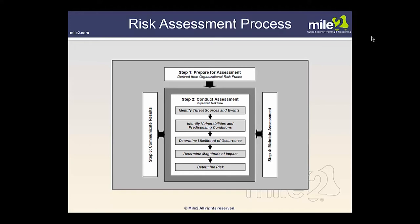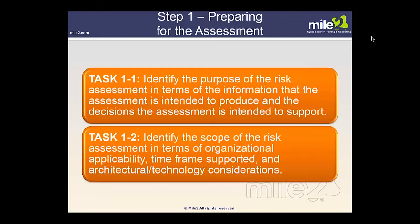The risk assessment process has several steps. Step 1 is to prepare for the assessment — derived from the organizational risk frame. Step 2 is to conduct the assessment, which includes identifying threat sources and events, identifying vulnerabilities and predisposing conditions, determining likelihood of occurrence and magnitude of impact, and determining risk. Step 3 is communicating results, and Step 4 is maintaining the assessment.